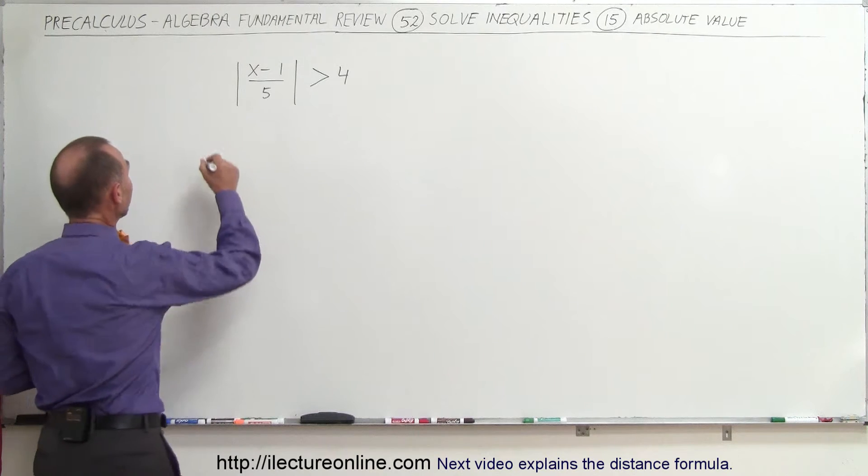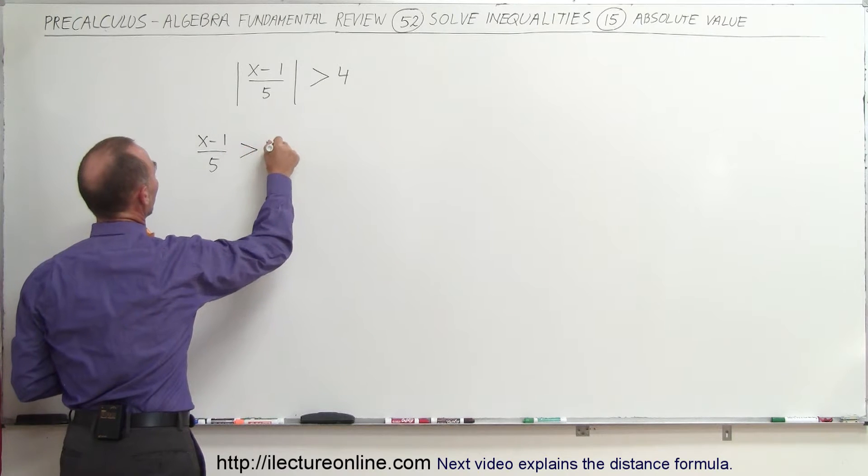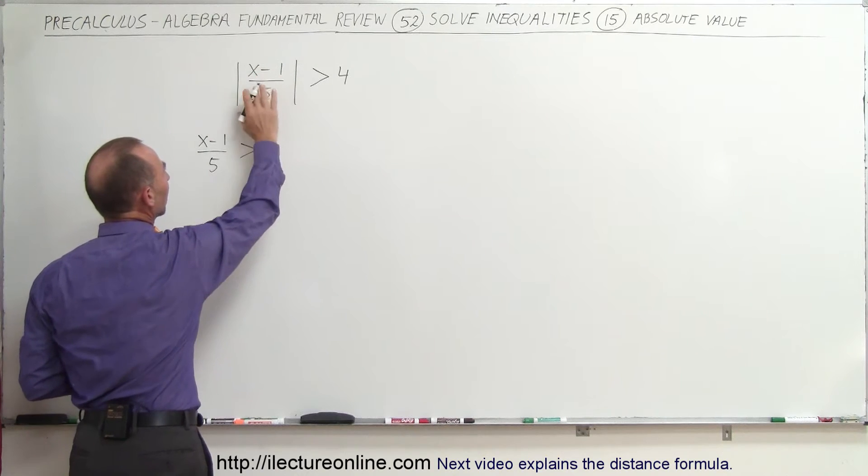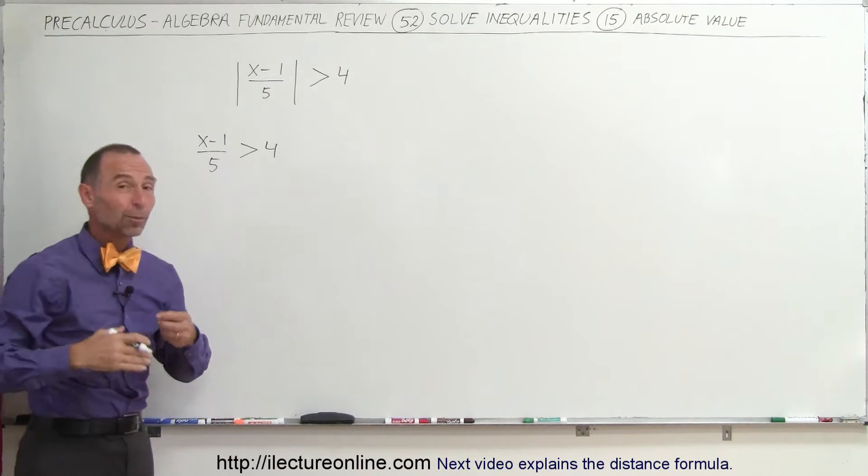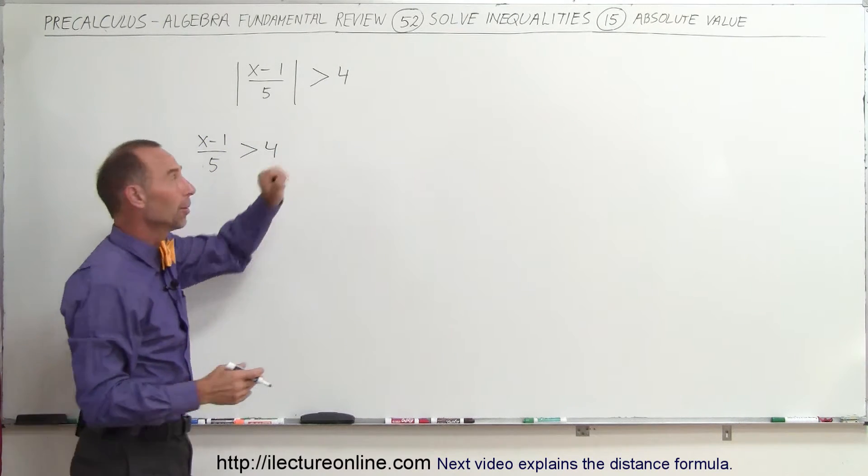so on the positive side we can write x minus 1 divided by 5 greater than 4. But what if this is a negative quantity? The absolute value signs make it into a positive quantity, which means that this can also be less than the negative of this number.